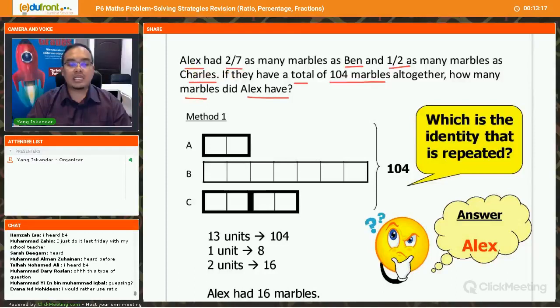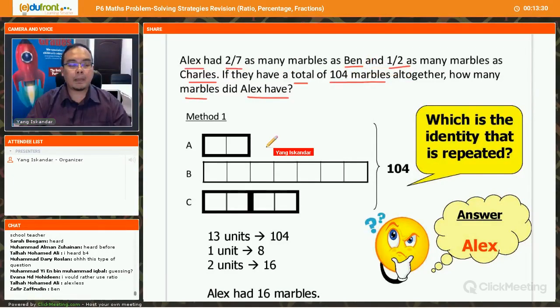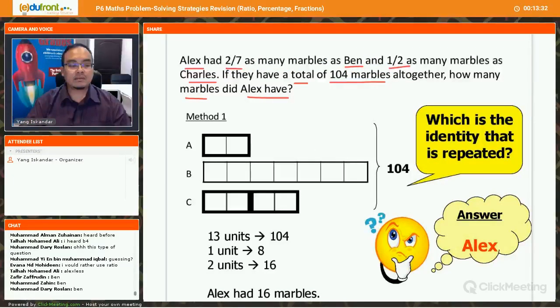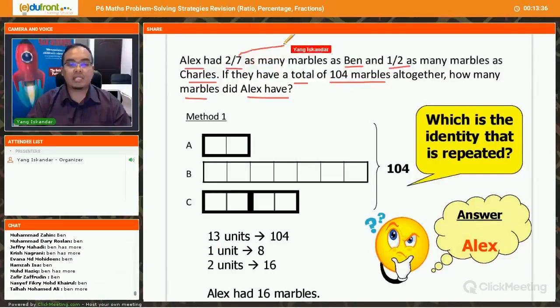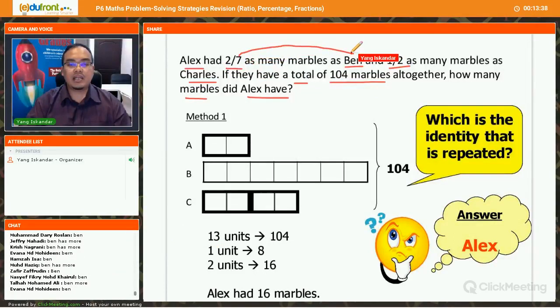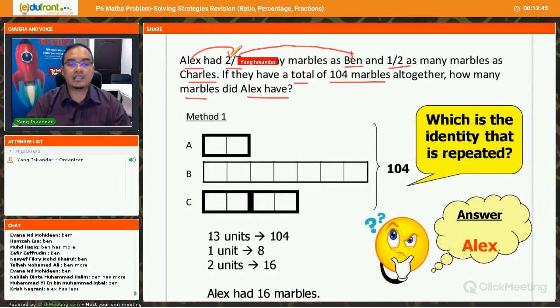Alex had 2/7 as many marbles as Ben. Now, who has more or who has less? Can you tell us who has more, who has less? In the first clue, Alex had 2/7 as many marbles as Ben. Who has more marbles? Very good. So Ben has more marbles. So you can see here, these 7 units belong to Ben and Alex has 2 units.